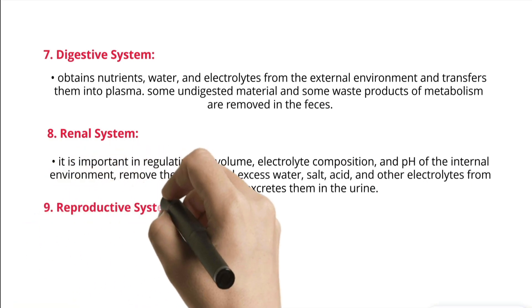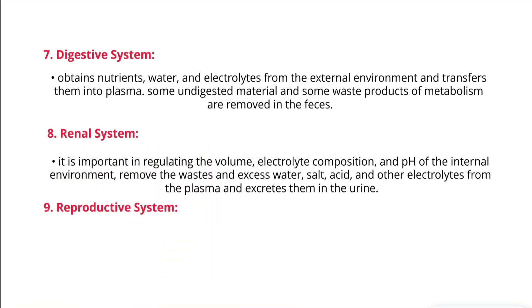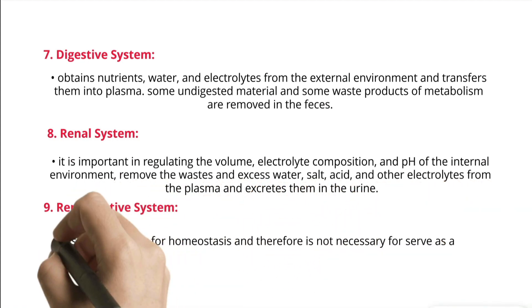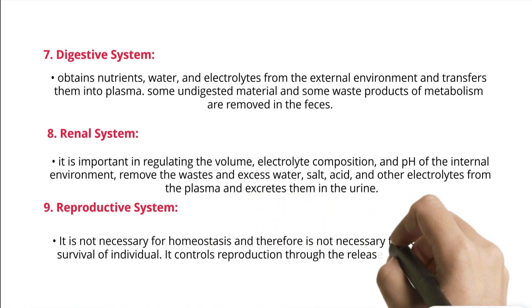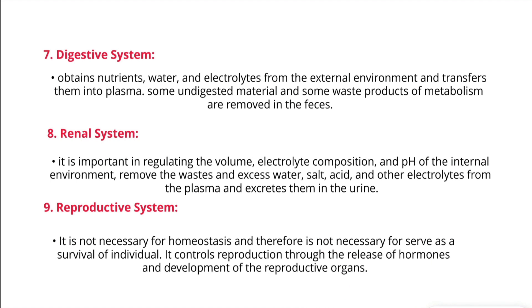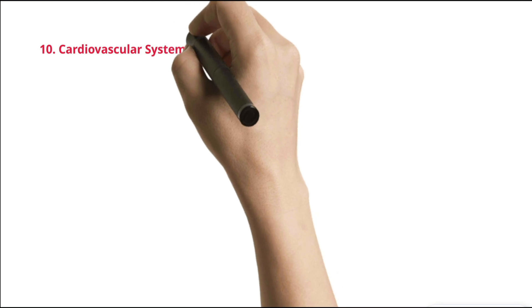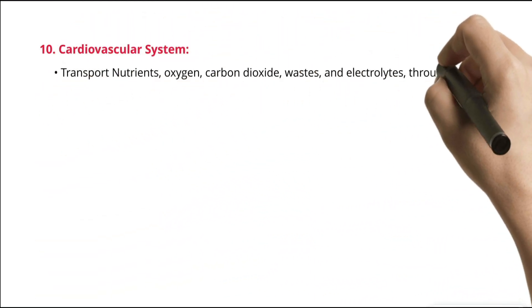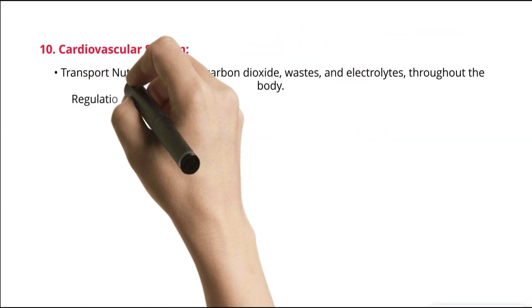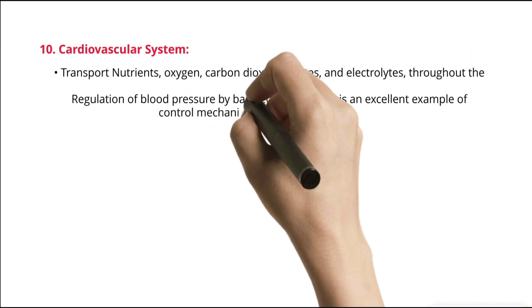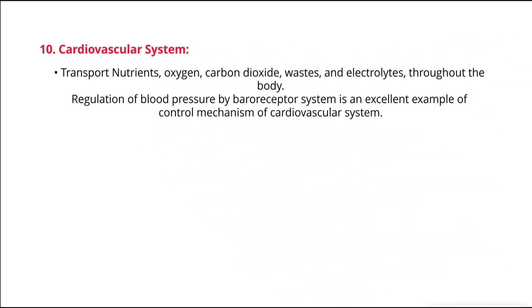9. Reproductive system — not necessary for homeostasis and therefore not necessary for survival of the individual. It controls reproduction through the release of hormones and development of the reproductive organs. 10. Cardiovascular system — transports nutrients, oxygen, carbon dioxide, wastes, and electrolytes throughout the body. Regulation of blood pressure by the baroreceptor system is an excellent example of a control mechanism of the cardiovascular system.